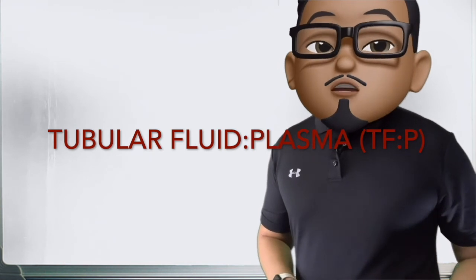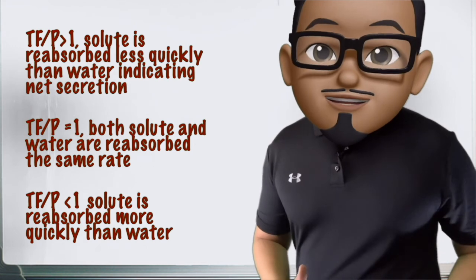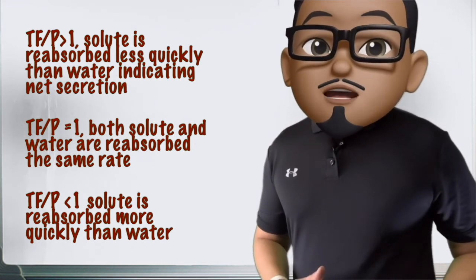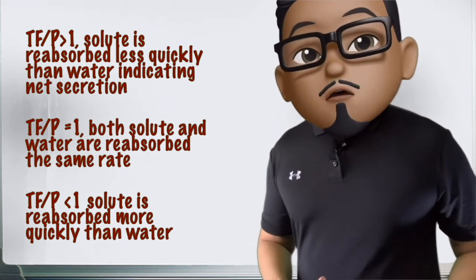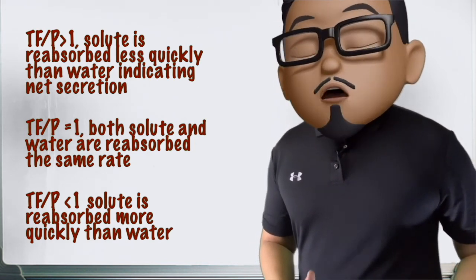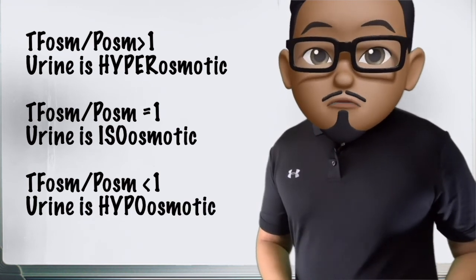The tubular fluid-to-plasma ratio measures tubular solute concentration along the nephron. If greater than 1, the solute is reabsorbed less quickly than water, indicating net secretion. If equal to 1, there is neither secretion nor reabsorption. If less than 1, solute is reabsorbed more quickly than water. This can also be expressed in terms of osmolality: greater than 1 means the urine is hyperosmotic with respect to plasma.